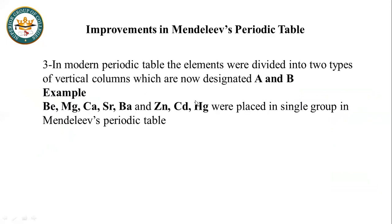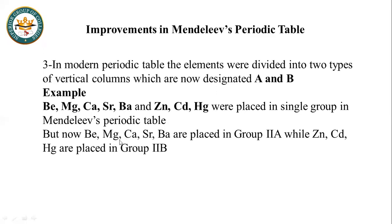For example, Beryllium, Magnesium, Calcium, Strontium, and Barium were all placed in Group 2. But Moseley separated them: Beryllium, Magnesium, Calcium, Strontium, and Barium went into Group 2A, while Zinc, Cadmium, and Mercury went into Group 2B. This is the concept of A and B subgroups, because the properties of Beryllium, Magnesium, Calcium, Strontium, and Barium are different from those of Zinc, Cadmium, and Mercury.